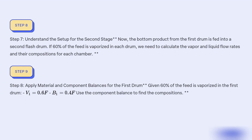Step 8: Apply material and component balances for the first drum. Given that 60% of the feed is vaporized in the first drum: V1 = 0.6F and B1 = 0.4F. Use the component balance to find the composition of each stream.